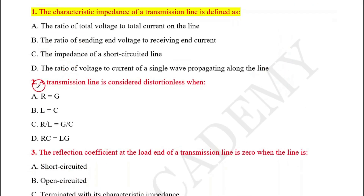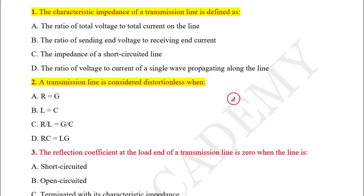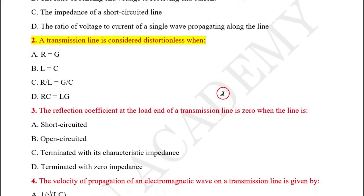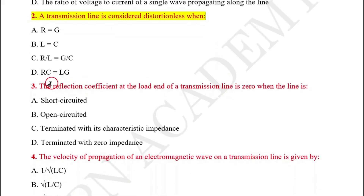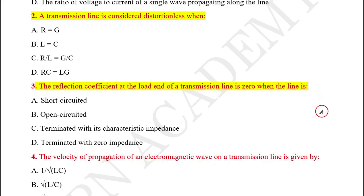Question number two: A transmission line is considered distortion-less when? Question number three: The reflection coefficient at the load end of a transmission line is zero when the line is?